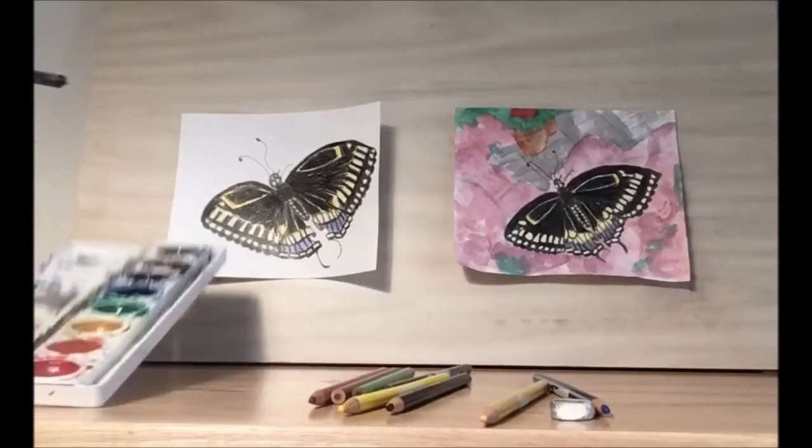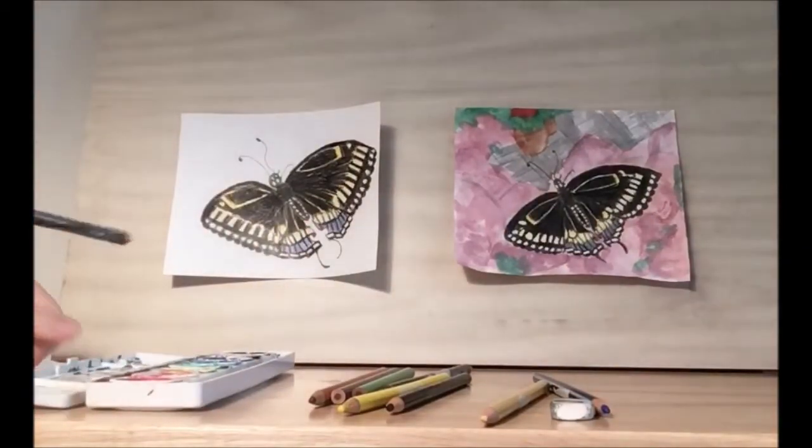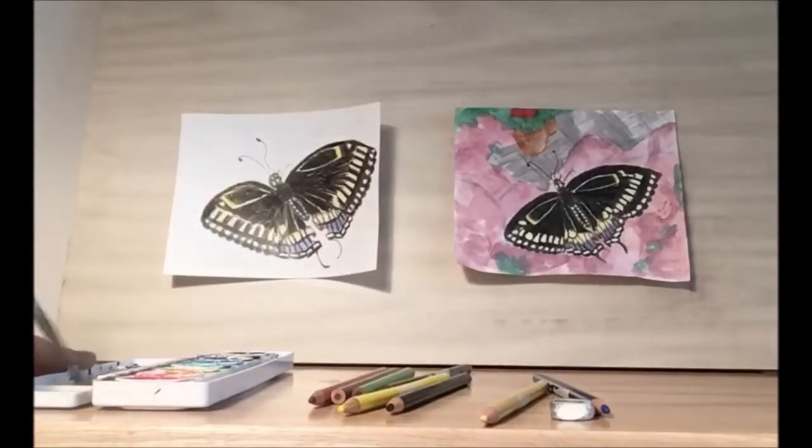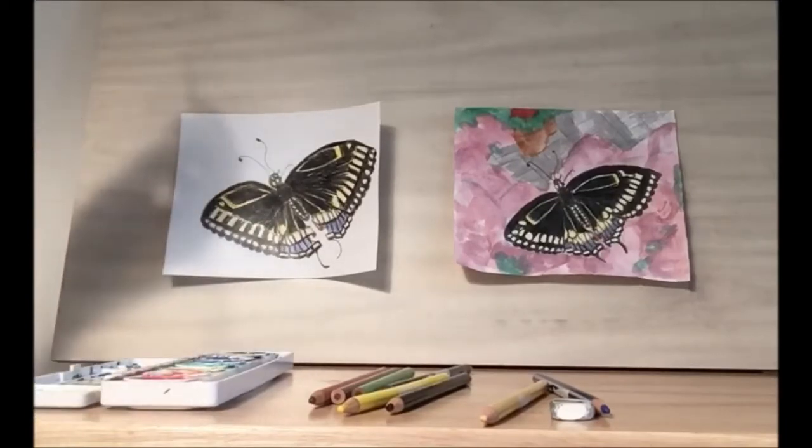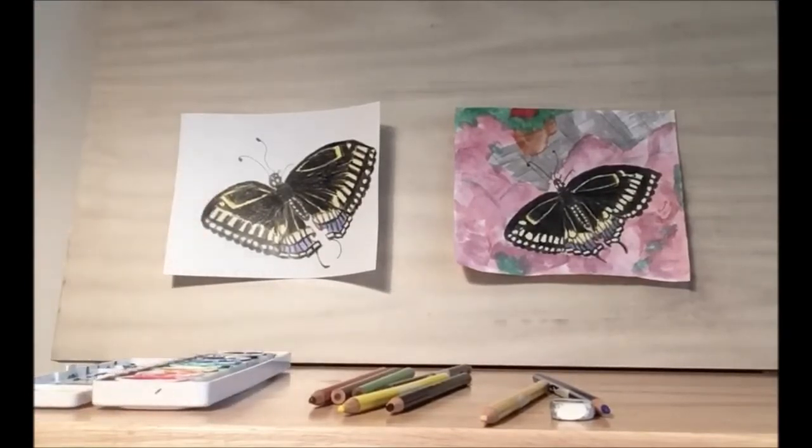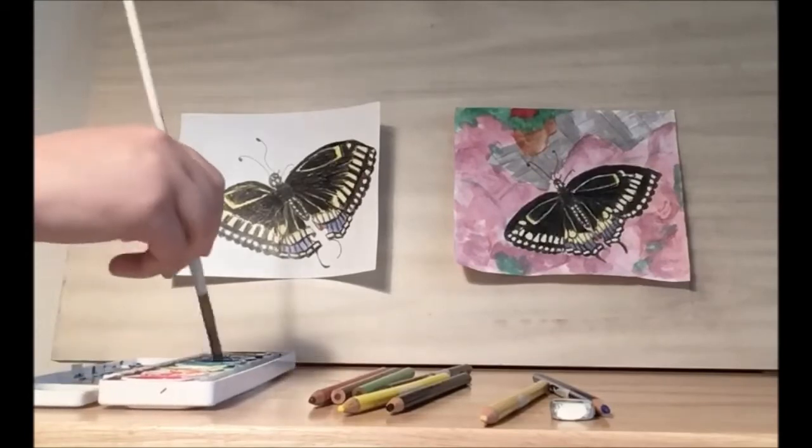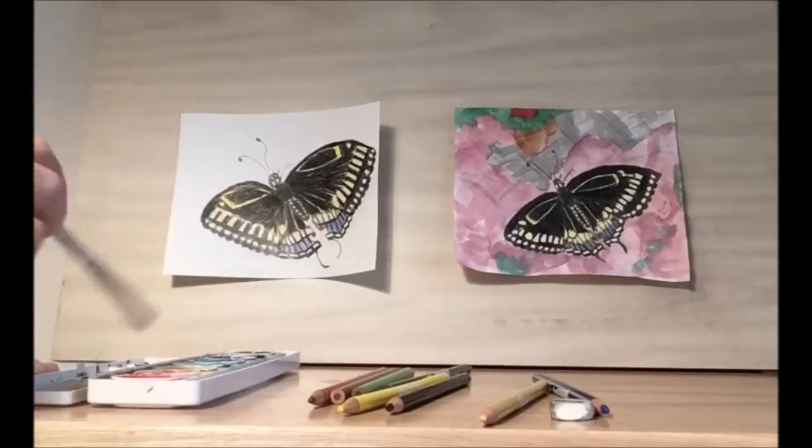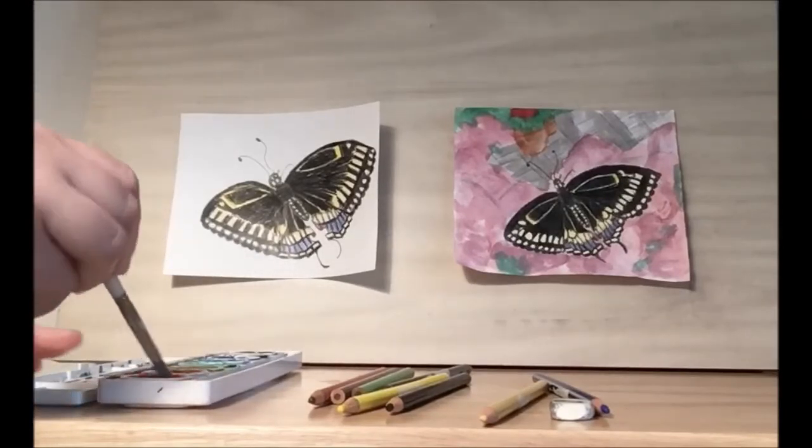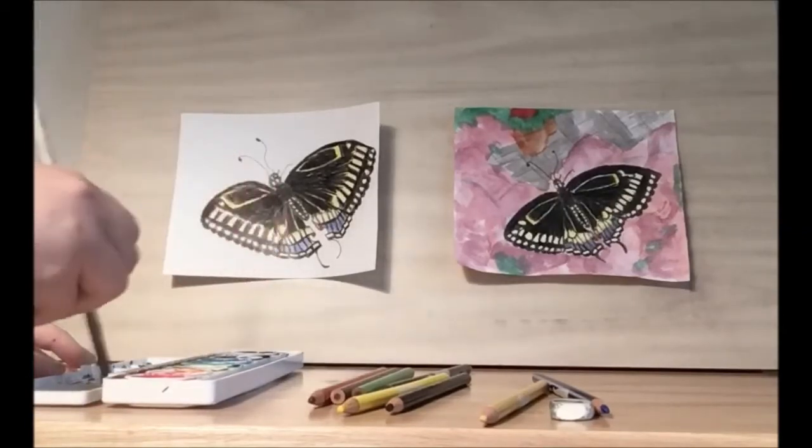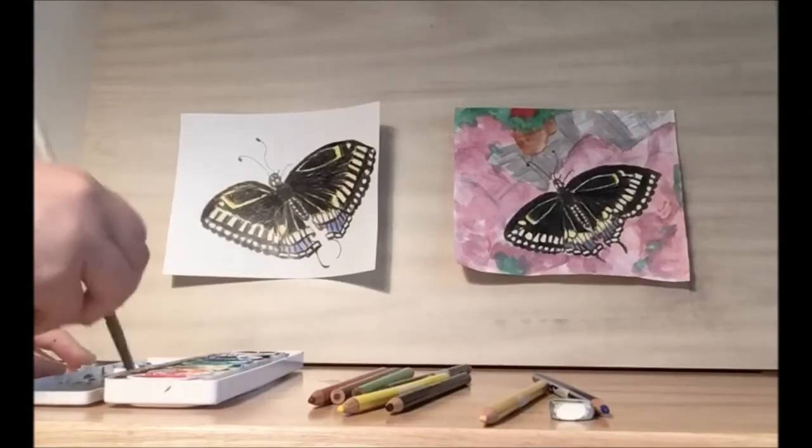And I'm still using the rainbow colored watercolor set. So this is a pink. So to get the pink, I'm going to take my red and a little bit of blue and mix it together until I get a shade that I'm comfortable with. And we're going to need a lot of the pink, so you're going to want to mix a lot so you have plenty to work with.